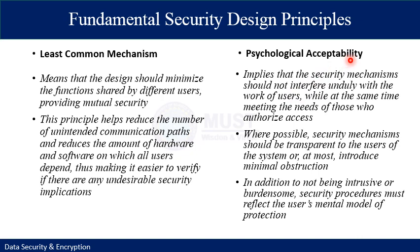Similar to that is psychological acceptability. It means the security mechanism should not interfere unduly with the work of the user — the user should not feel burdened by having to follow many requirements to perform a task. The system should meet the needs of those who authorize access. Where possible, security mechanisms should be transparent to the user, or at most introduce minimal obstructions. If a security mechanism is very difficult to understand, it will hinder usability or accessibility, and the user may want to turn it off to perform actions more swiftly.